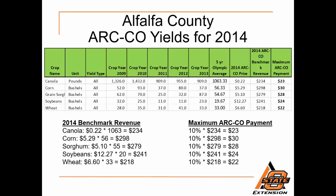Here's an example from Alfalfa County using ARC County yields in 2014. Crops listed include canola, corn, grain sorghum, soybeans, and wheat. Using wheat as an example, we look at crop years from 2009 to 2013, with county average yields of 28, 35, 31, 41, and 33 bushels per acre. Taking the five-year Olympic average of those yields — removing the highest and lowest observations — we come up with an average of 33 bushels per acre. Similarly, the 2014 ARC County price uses the five-year Olympic average of marketing year average prices to arrive at a price of $6.60.